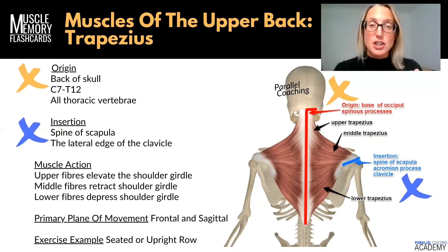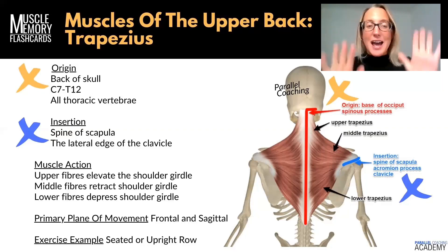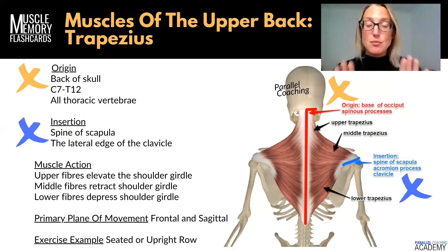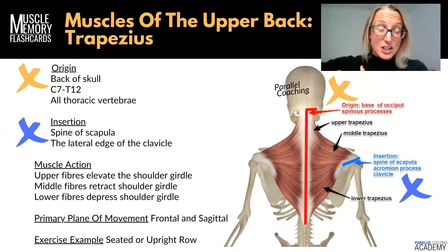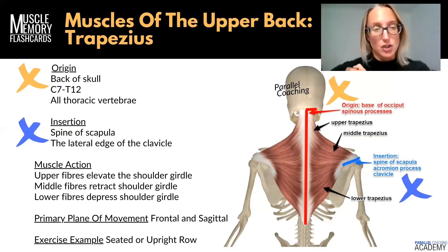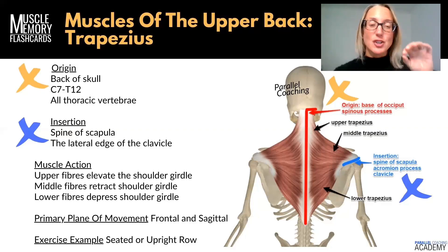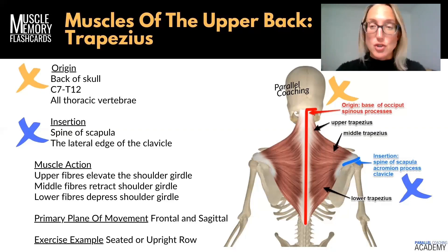The shoulder girdle does not include the glenohumeral ball-and-socket joint. The shoulder girdle can do actions like elevation, depression, retraction, and protraction — movement of the scapula at the back. However, there are nine other actions that the ball-and-socket shoulder joint can do, and that's not what we're going to talk about with the trapezius. Just know that the trapezius has an action on the shoulder girdle, not on the ball-and-socket shoulder joint — that's a really important distinction.